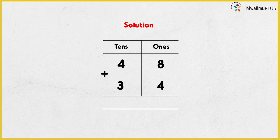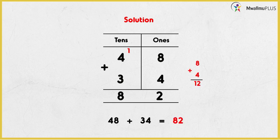So we're adding in the ones column. We have 8 and 4. What do you get when you add 4 plus 8? 12. Correct. So, are we going to write 12 in the ones column? No! Because 12 is a big number and you cannot write a two-digit number in the same place value. Therefore, we are going to regroup 12.